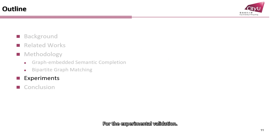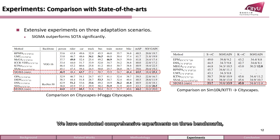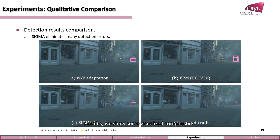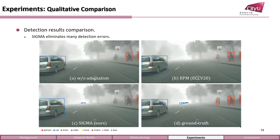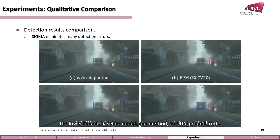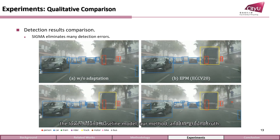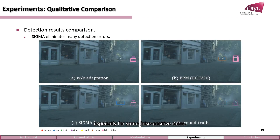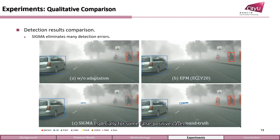For experimental validation, we have conducted comprehensive experiments on three benchmarks, which verify our state-of-the-art performance. Besides, we show some visualized comparisons. The figures from A to D represent the lower bound, baseline model, our method, and the ground truth. We can find that our method can reduce some detection errors, especially for some false positive cases.